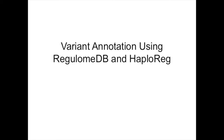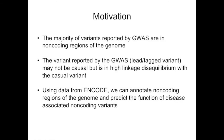Now I'm changing gears. I'm going to be talking about variant annotation using RegulomDB and HaploReg. The motivation is that the majority of variants reported by genome-wide association studies are in non-coding regions of the genome, and often the variant reported by the GWAS is not necessarily the causal variant. By using ENCODE data, you can annotate non-coding regions and try to figure out how these variants are contributing to the phenotype you're interested in.